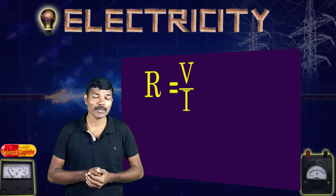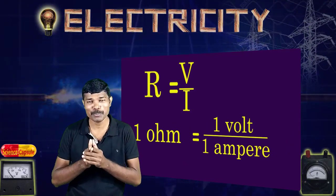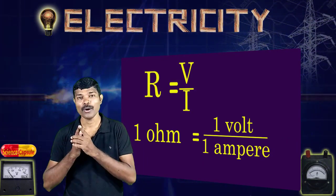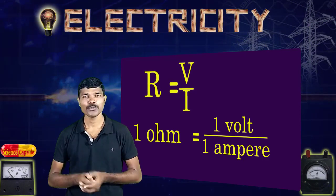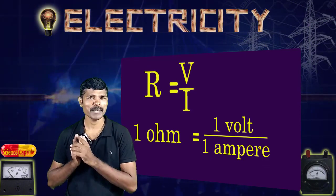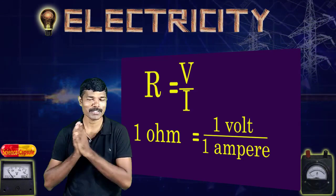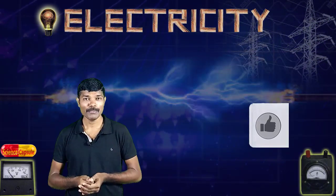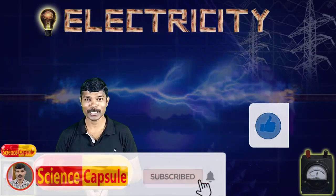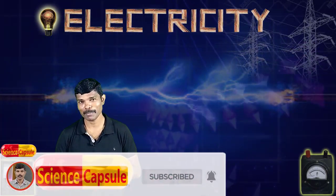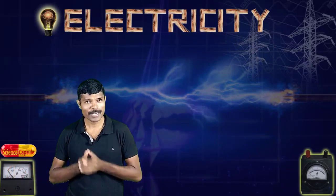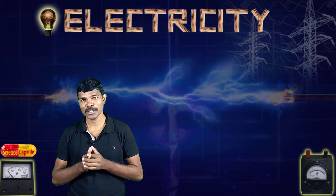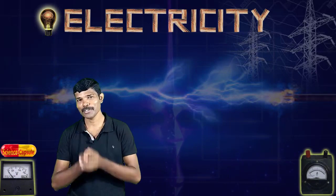If 1 volt of potential difference is applied and it produces 1 ampere of current in the circuit, then we call it 1 Ohm of resistance. From the activity and explanation, I believe you understood the relation between potential difference and current. Hope you found this video useful — if so, hit the like button, subscribe this channel, and press the bell icon to be notified whenever I upload a new video. If you have any doubts, mention them in the comment section. See you on another day with a new video. Till then, take good care of yourself. Bye.